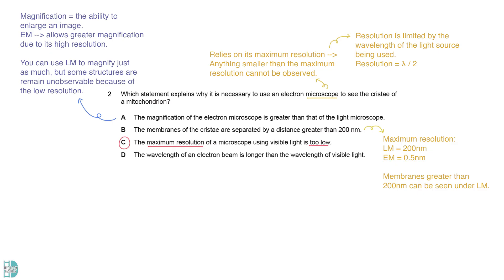If the membranes are greater than 200 nanometers apart, they should be seen under the light microscope. D is incorrect because a longer wavelength divided by 2 should result in a larger value, which would lead to a lower resolution.